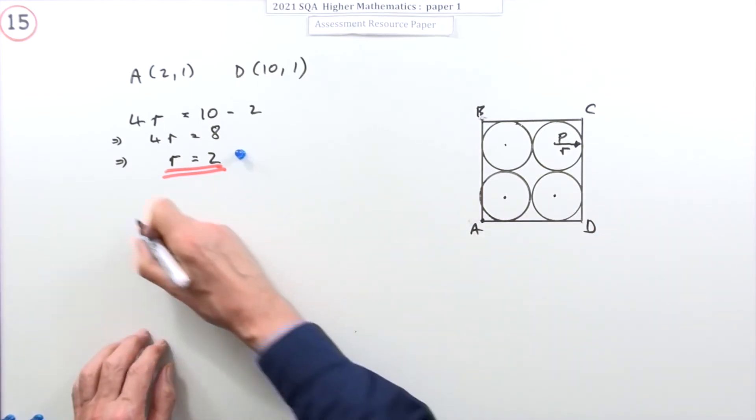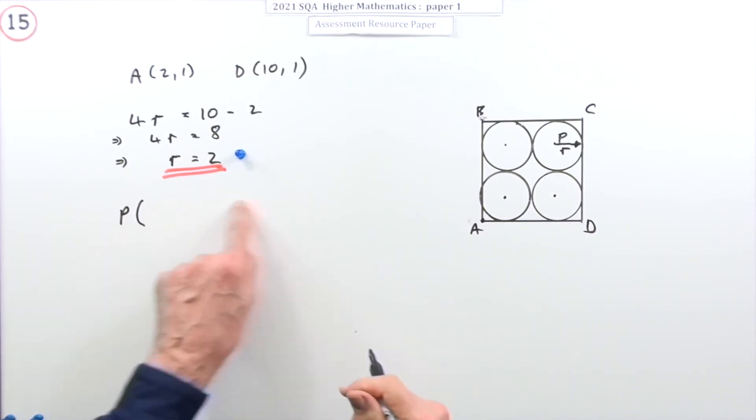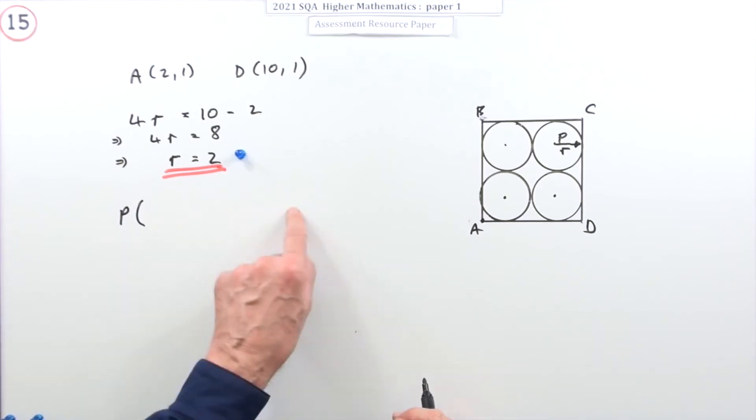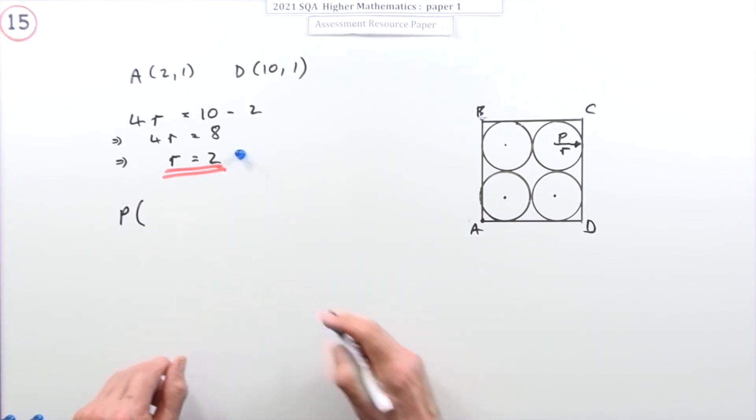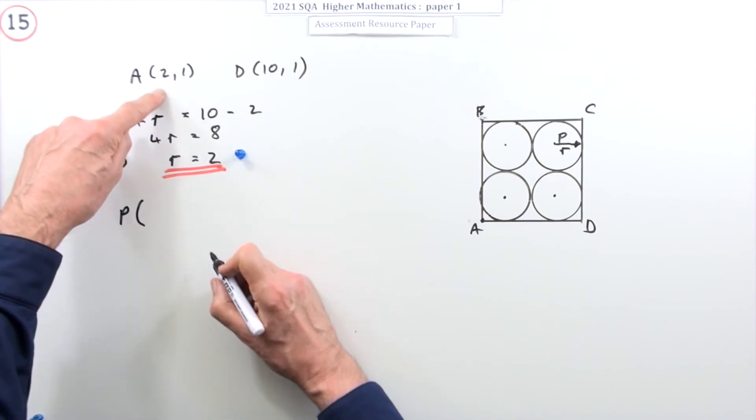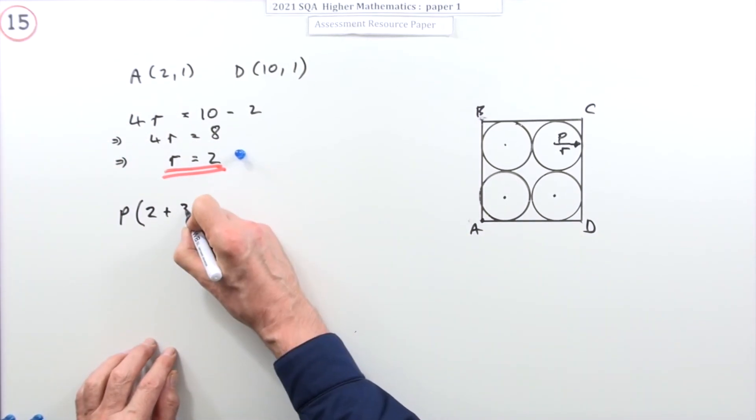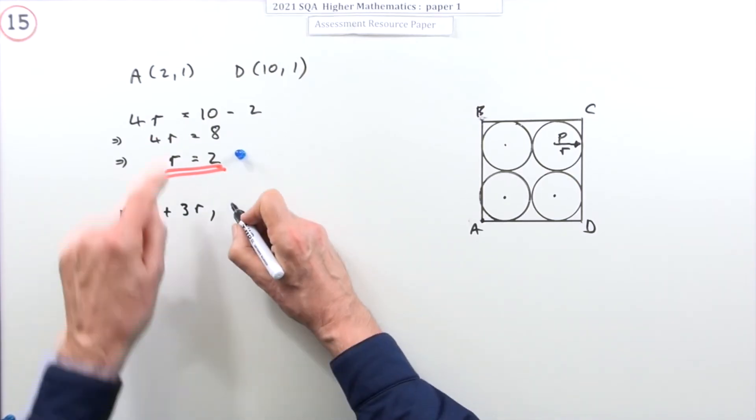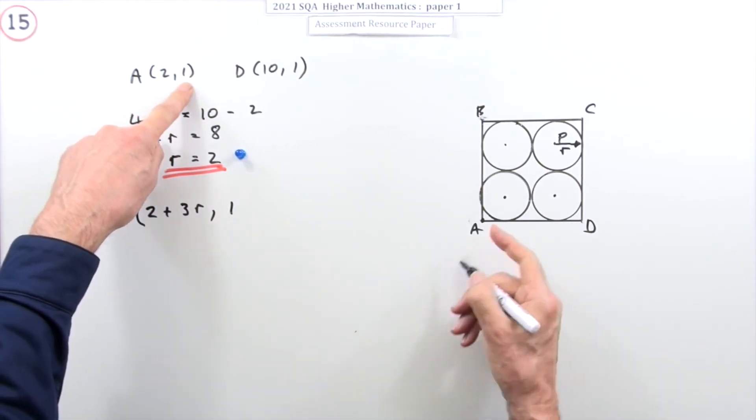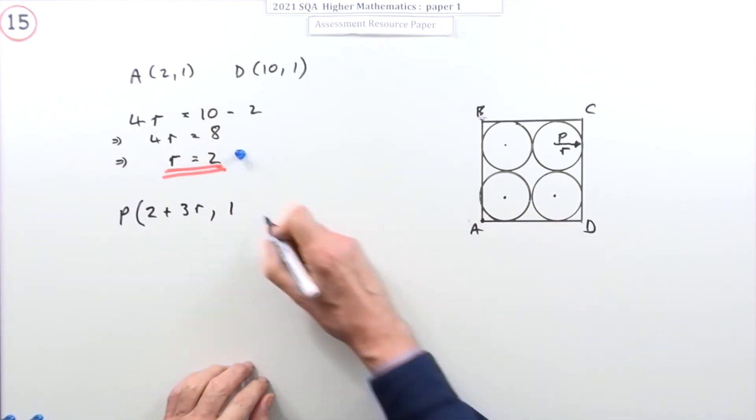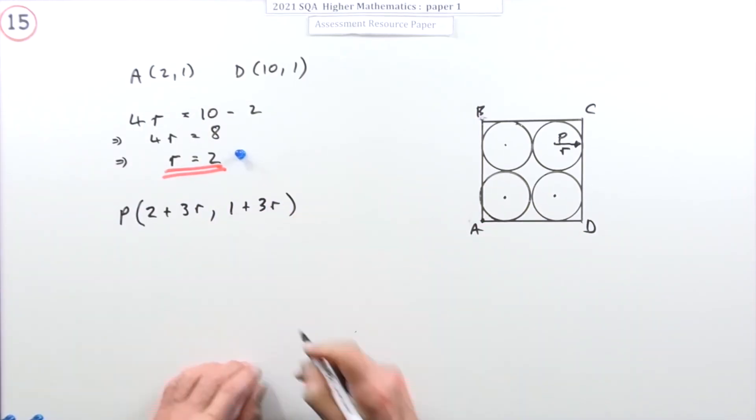In other words, to get to that point P, instead of using a displacement equation, I'll just put the values in. A starts at 2, and I'm going to go three lots of the radius along. The y-coordinate is 1 down here, and I'm going to go three lots of the radius up. That's how we get to P.